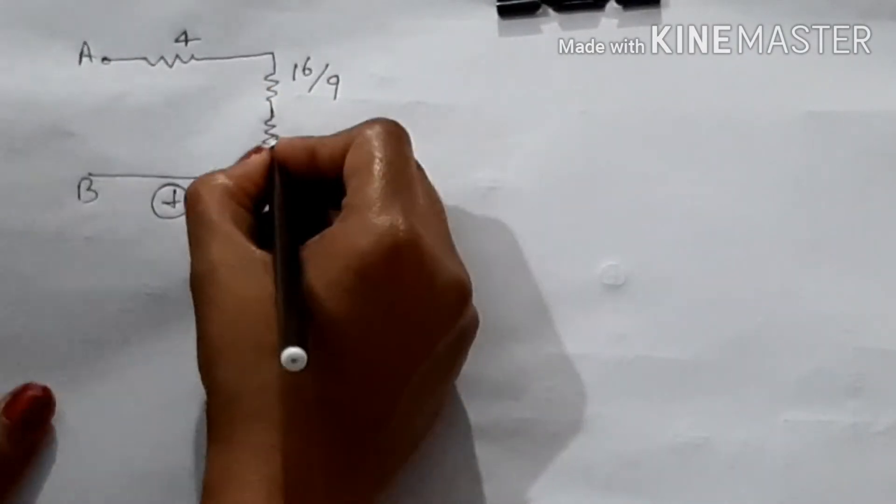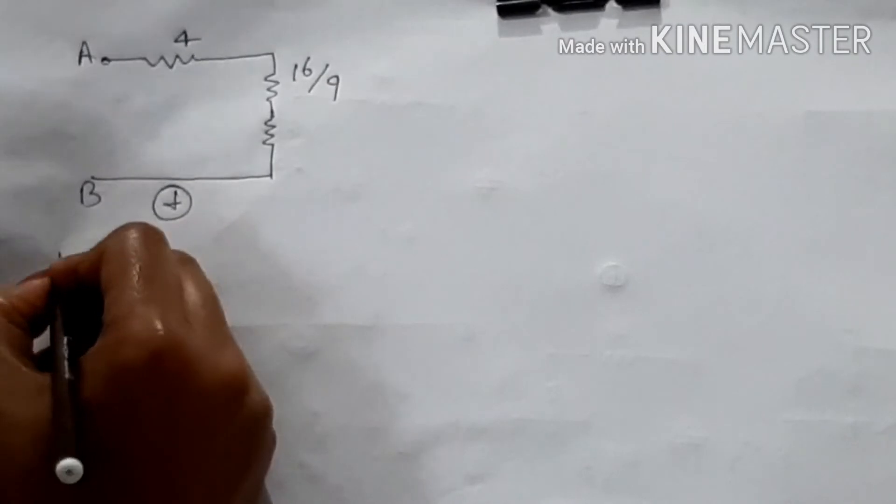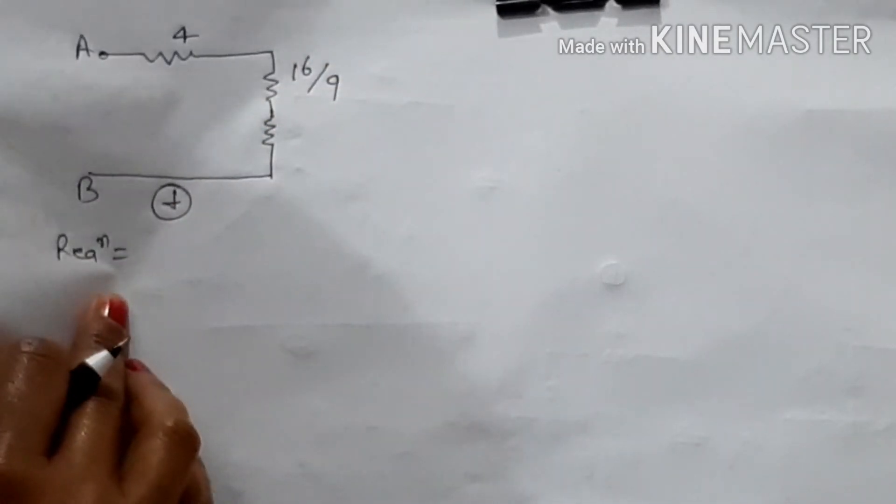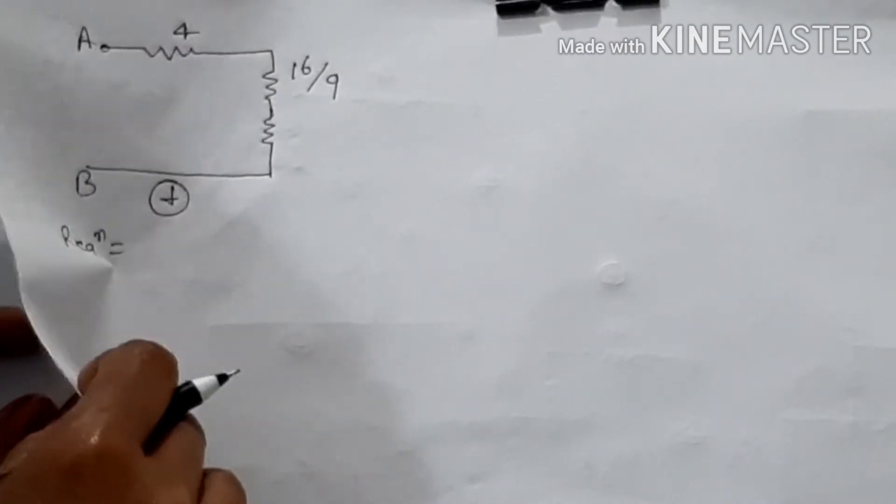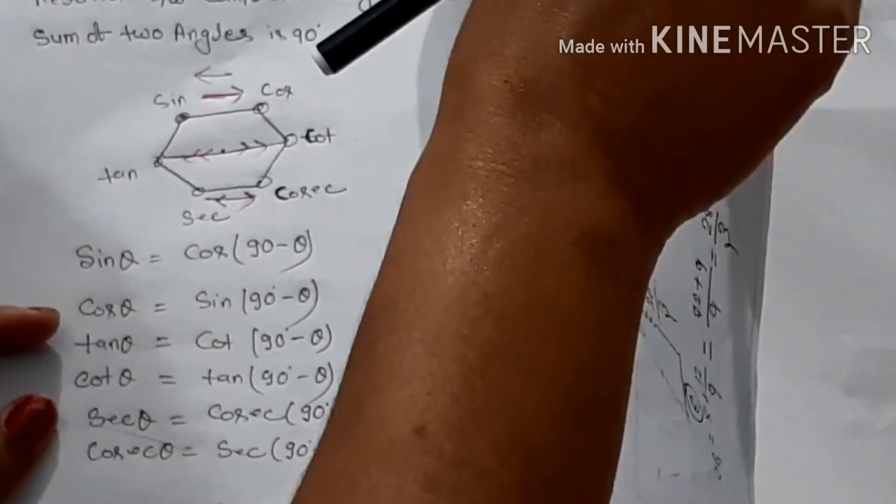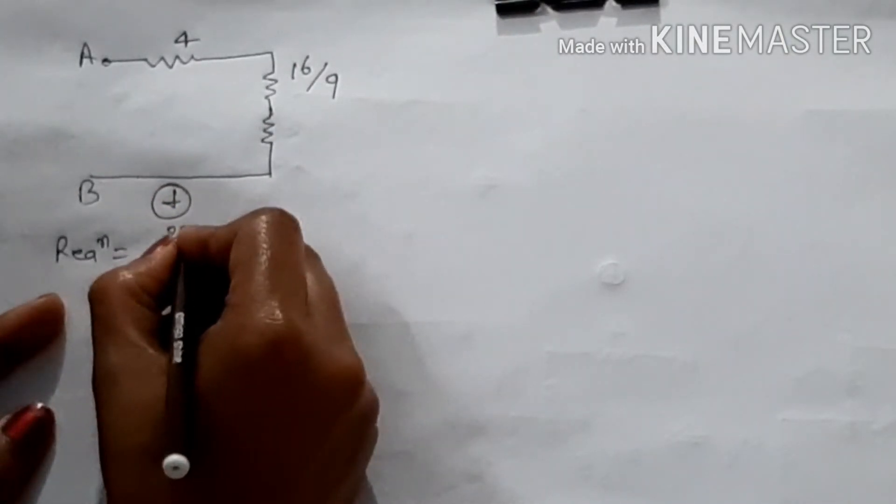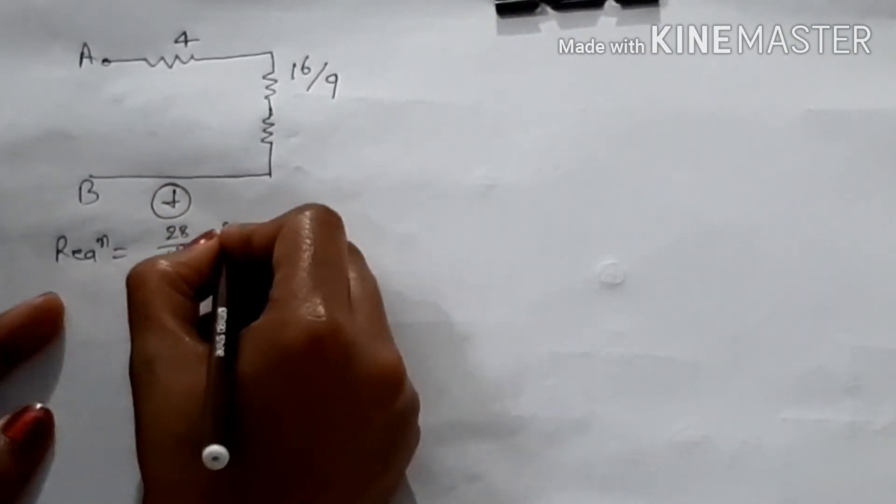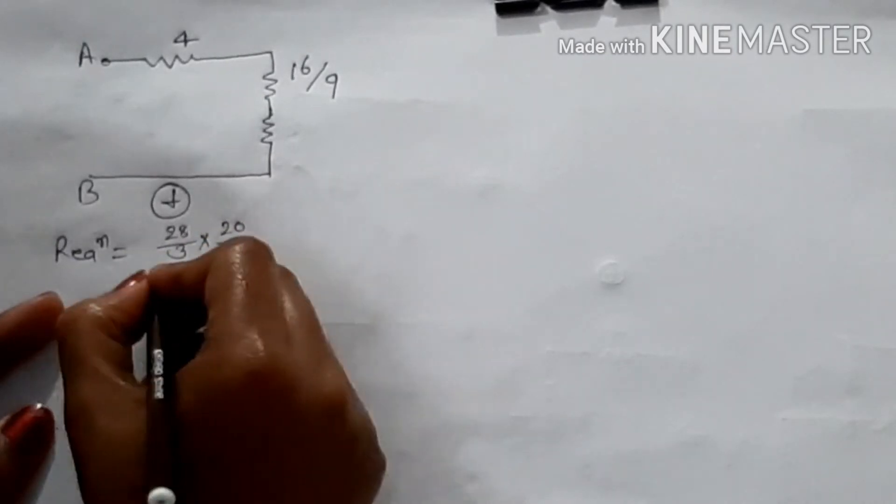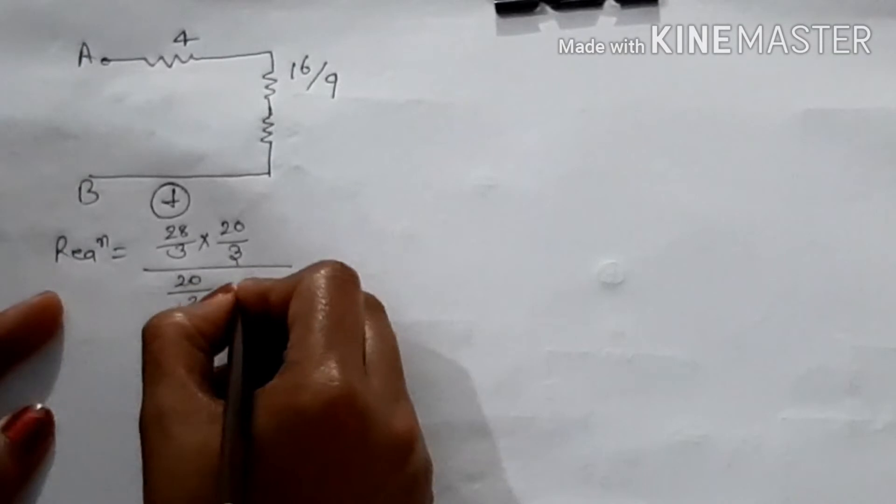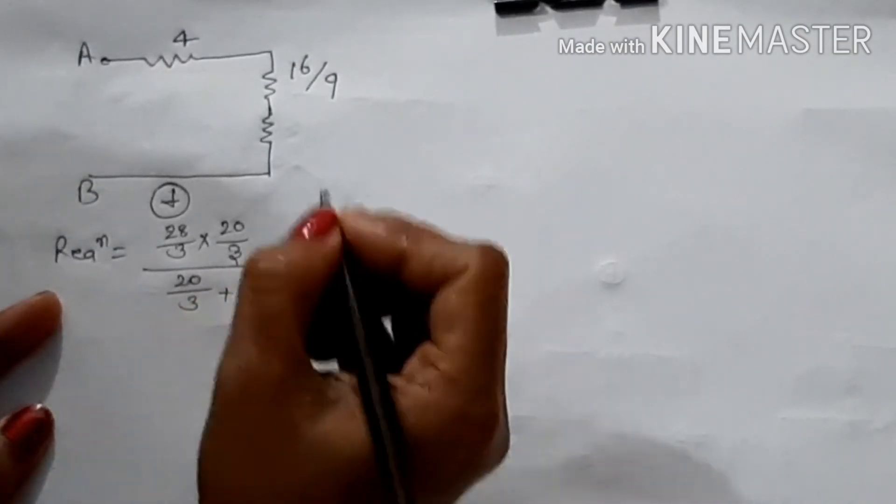Here is figure number E. So, what is R equivalent here? If R equivalent here is parallel, 28 upon 3 and 20 upon 3. Then 28 upon 3 into 20 upon 3 divided by 20 upon 3 plus 28 upon 3. So, if we calculate this, how much is it?